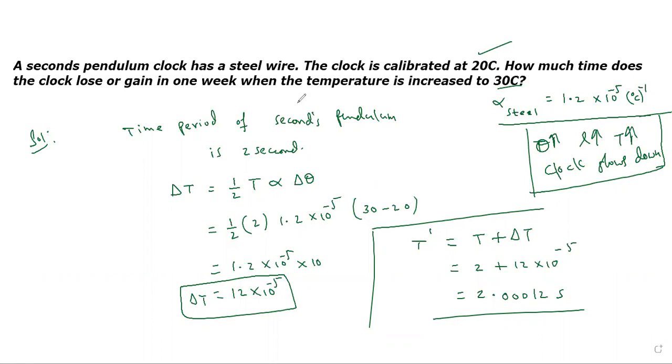Now here he is asking time loss in one week. Time loss in one week equals delta T by T dash times T.